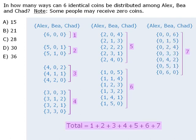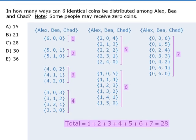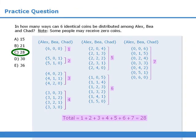So the total number of outcomes will be the sum of numbers from 1 to 7, which equals 28. So the answer here is C.